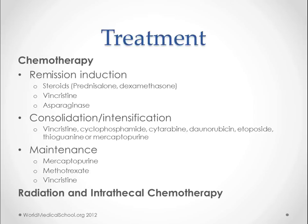In the consolidation and intensification phase, we're basically trying to wipe out the remaining cells. The drugs used include vincristine, cyclophosphamide, cytarabine — these are our harsher chemotherapy drugs. For maintenance, we use mercaptopurine daily, methotrexate weekly, and a course of vincristine five days out of each month.